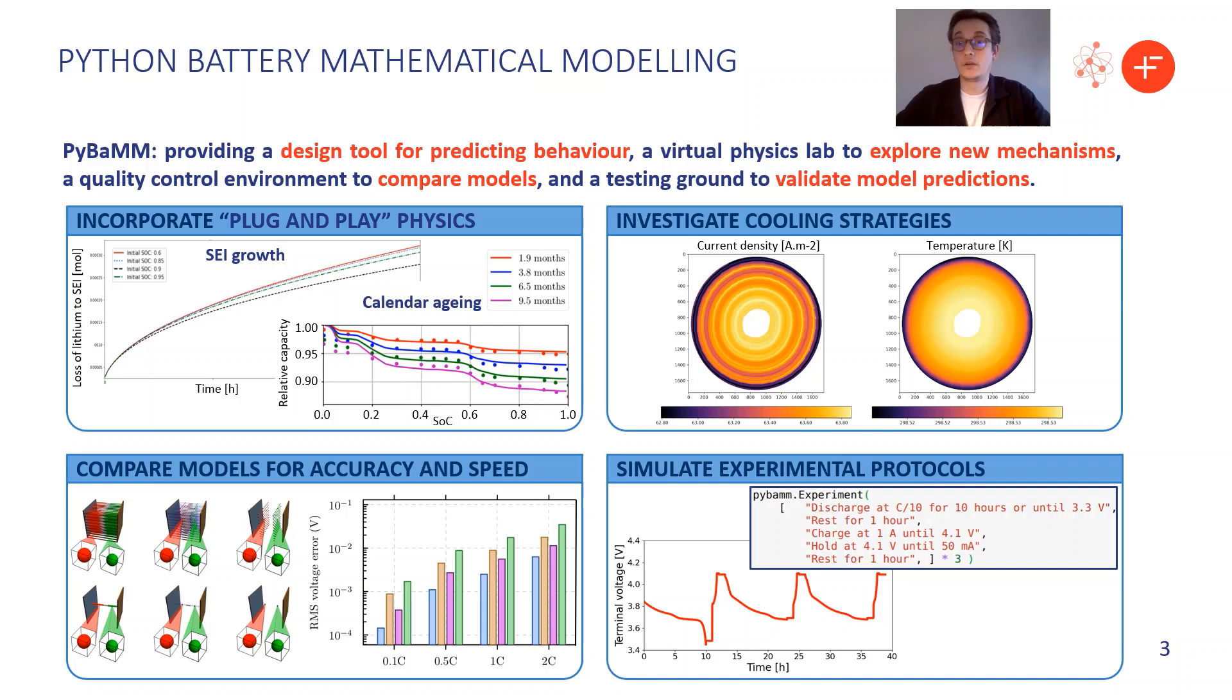PyBaMM makes it easy to compare models for accuracy and speed. So a large portion of the work going on within Faraday Institution is developing reduced order models. And we can implement these models in PyBaMM and compare them to the full models to see how they perform in a wide range of scenarios.